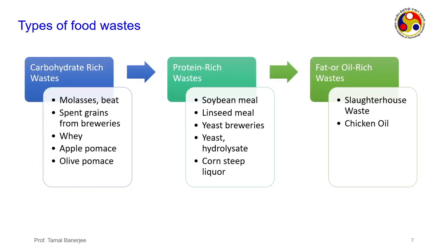There are different types of food waste by composition. Carbohydrate-rich waste includes molasses, beet, spent grains from breweries, whey, apple pomace, and olive pomace. Protein-rich waste includes soybean meal, linseed meal, yeast from breweries, yeast hydrolysate, and corn steep liqueur. All these different waste streams have the potential to be converted into platform chemicals or fuel sources.